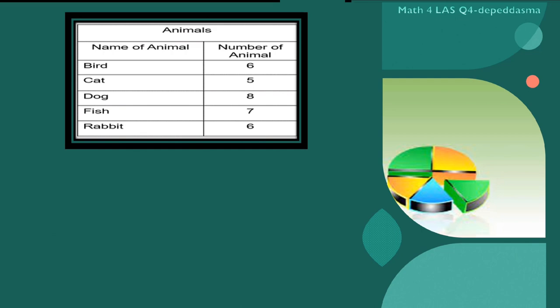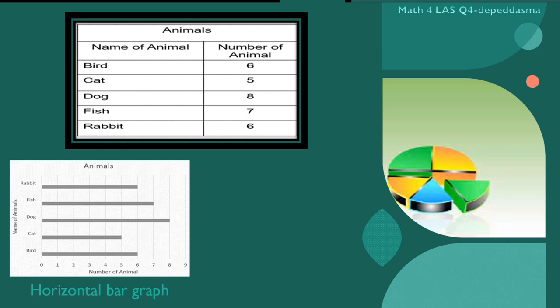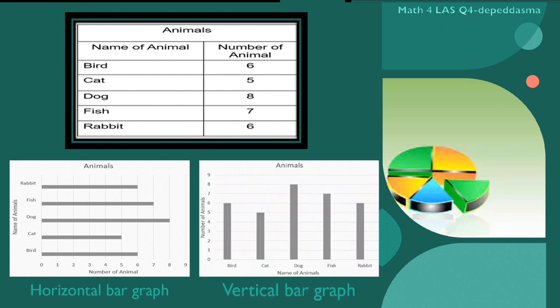Aside from tabular form, we can also present the data in a single bar graph. A bar graph can be drawn either horizontal or vertical.